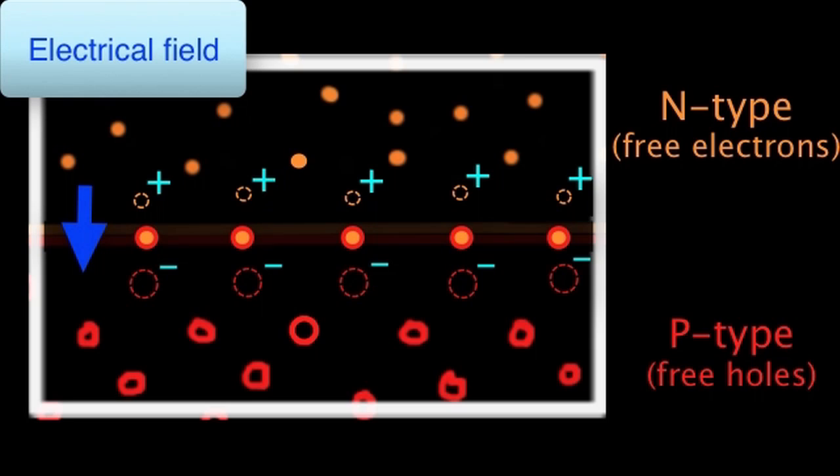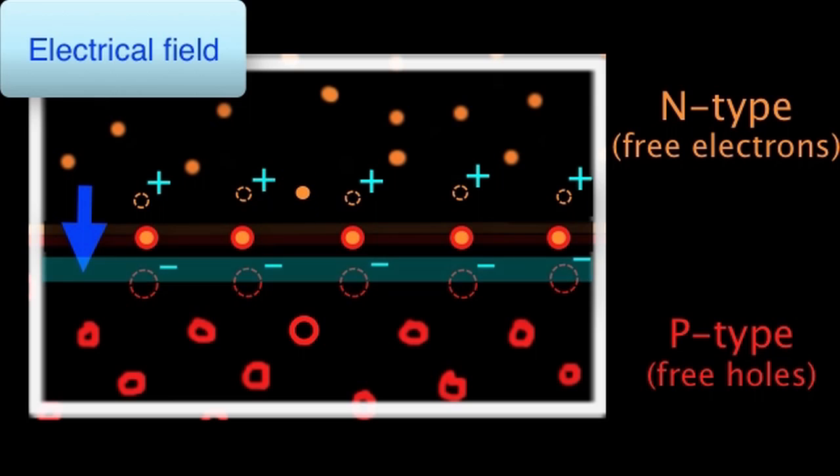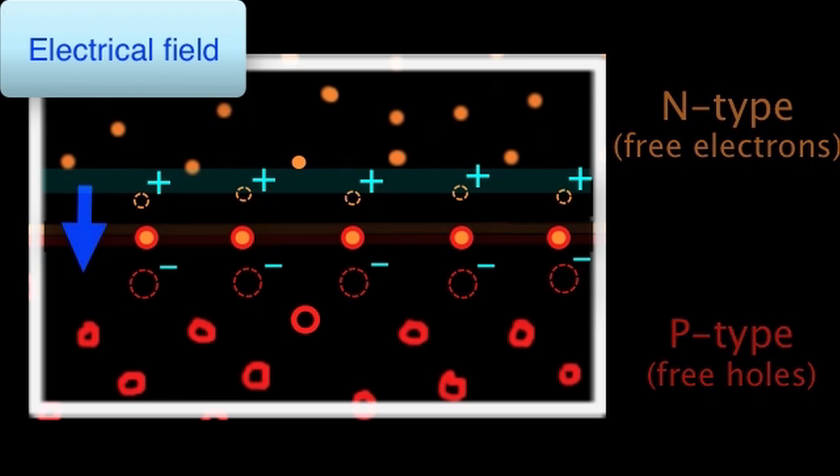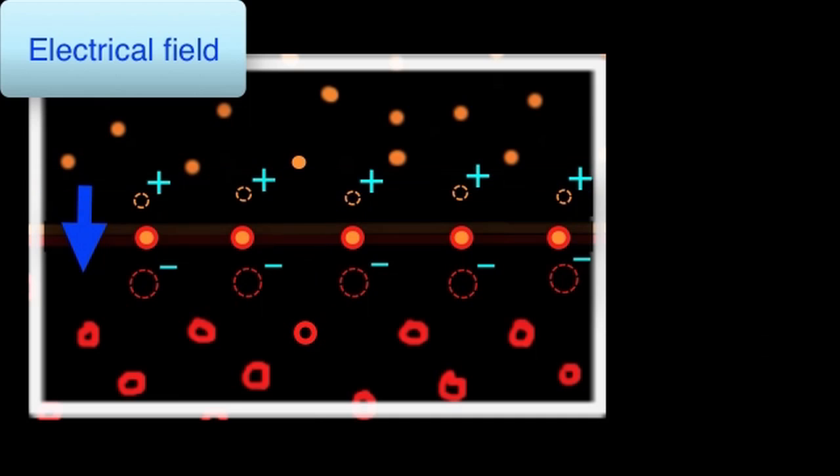In fact, new electrons trying to reach the junction are pushed back by the negative charges of the P-type, while new holes are repulsed by the positive charges of the N-type. Overall, the field acts as some kind of wall that keeps the electrons to the N-side and the holes to the P-side.